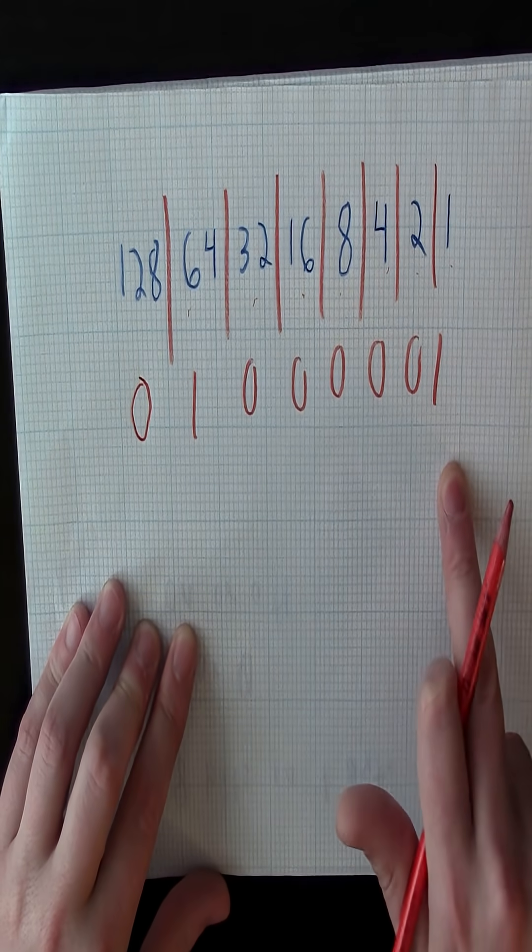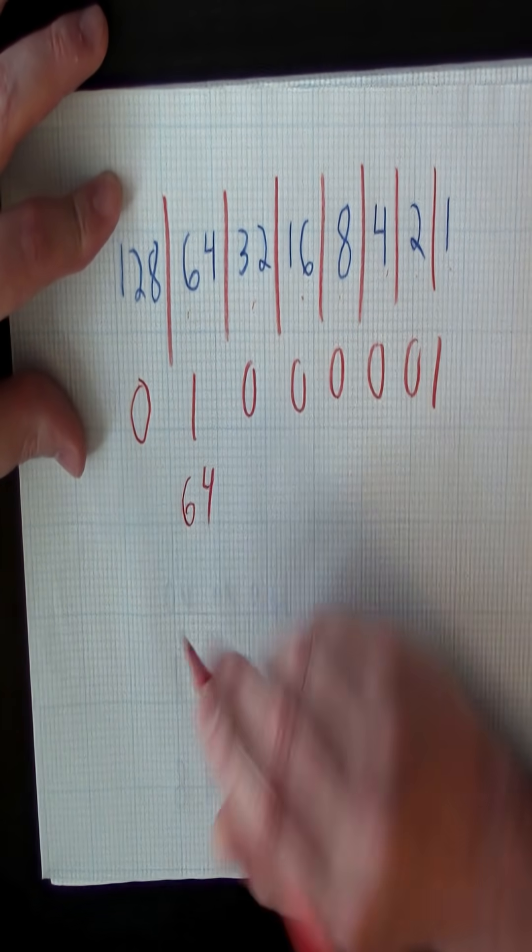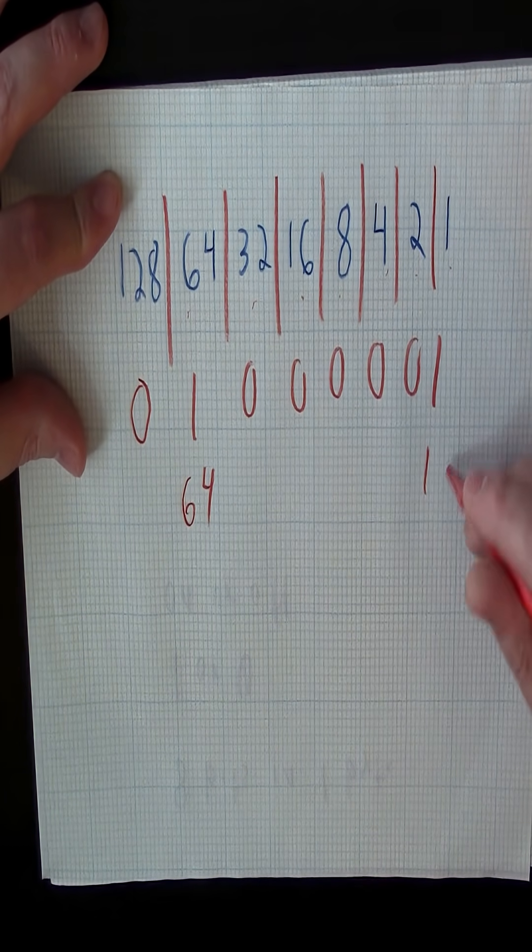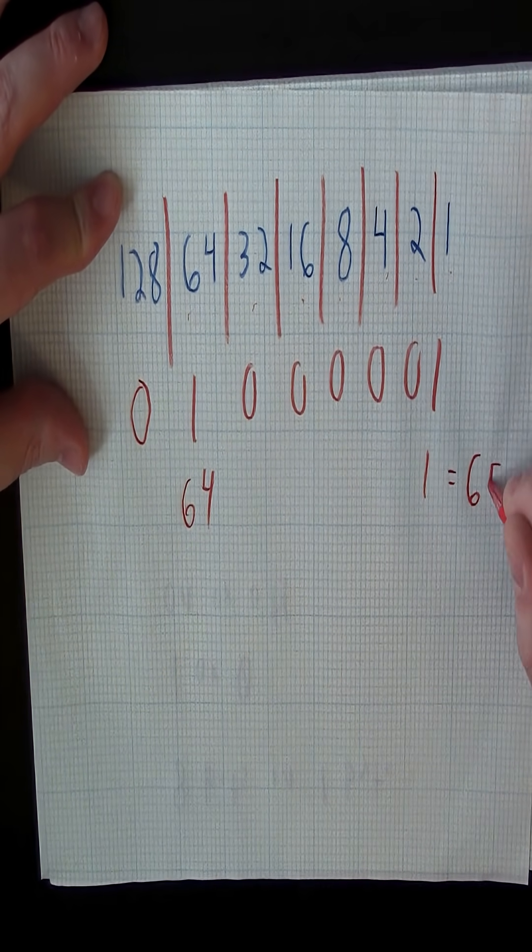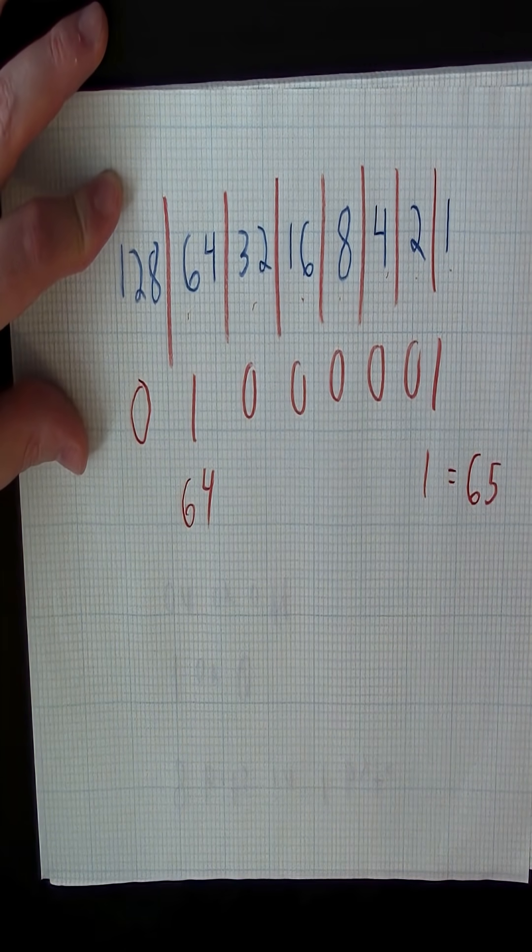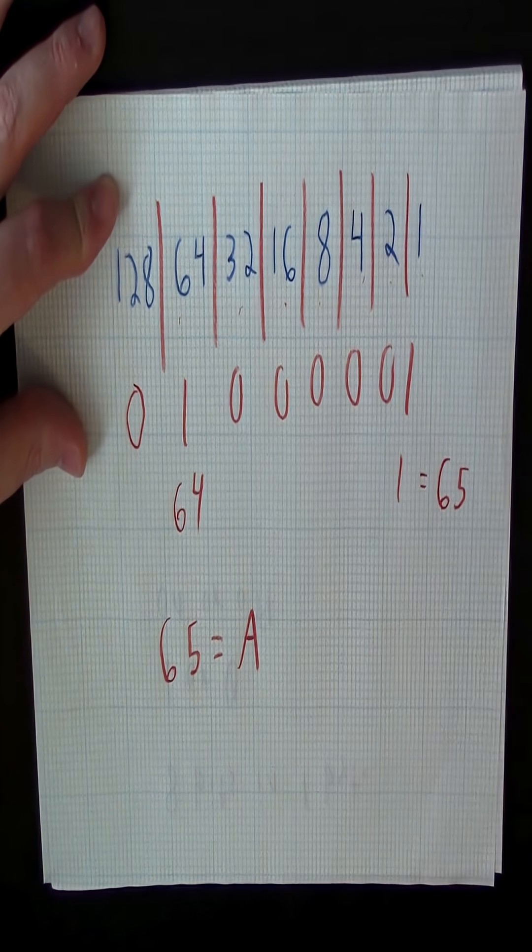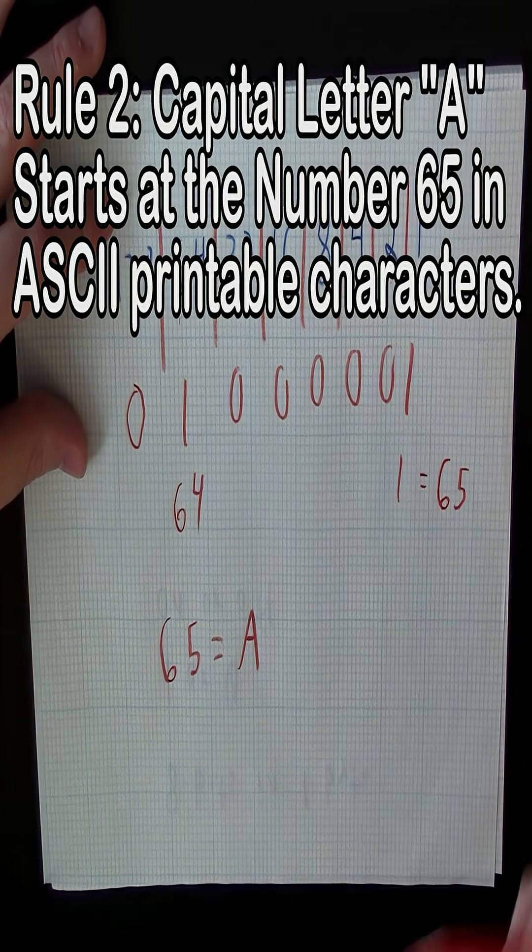Now I did that for a particular reason, but we have 64 and we have a one, which equals 65 when added. Now the interesting thing about 65 is 65 equals capital letter A in ASCII to principal characters.